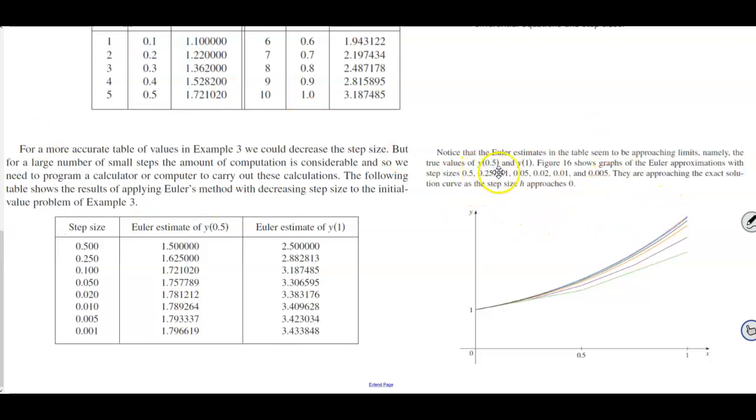And so figure 16 shows a graph of the Euler approximations with step sizes of 0.5, 0.25, 0.1, 0.05, 0.02, 0.01, and 0.005. And they are approaching the exact solution curve as the step size h approaches 0.